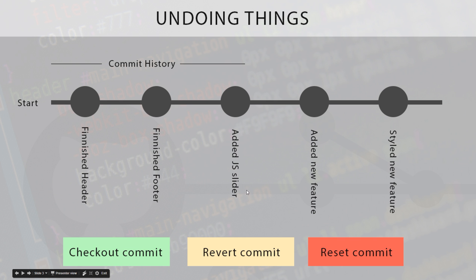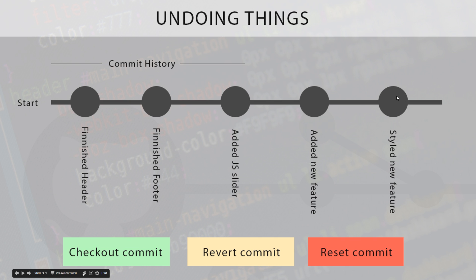Revert basically lets us undo a particular commit. Say your boss says he doesn't like a slider and wants you to revert that commit. Revert commit is going to put a big X through that commit as if it never happened — it's going to revert those changes. It doesn't actually delete it from history, but the effects are the same. Reset commit is the dangerous one — it's going to permanently take you back in time to a particular commit and permanently delete all commits after it.